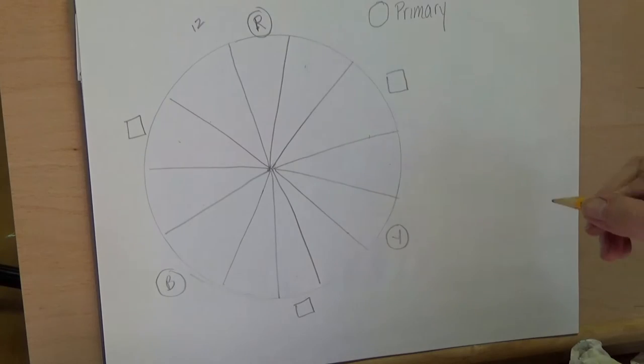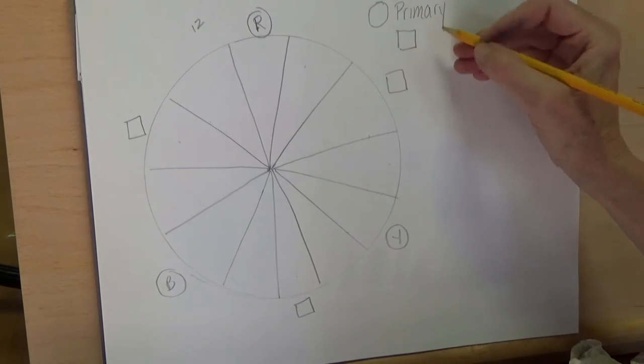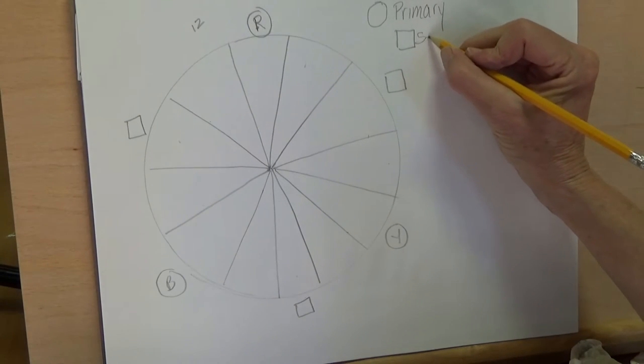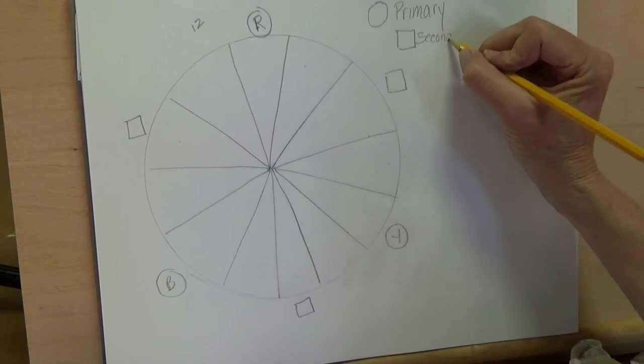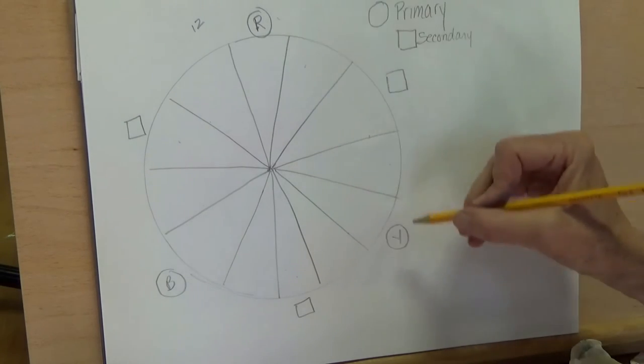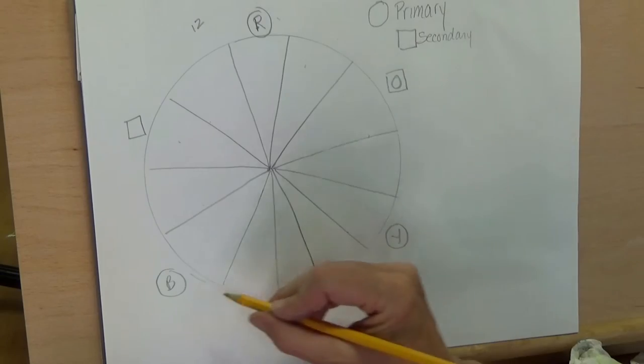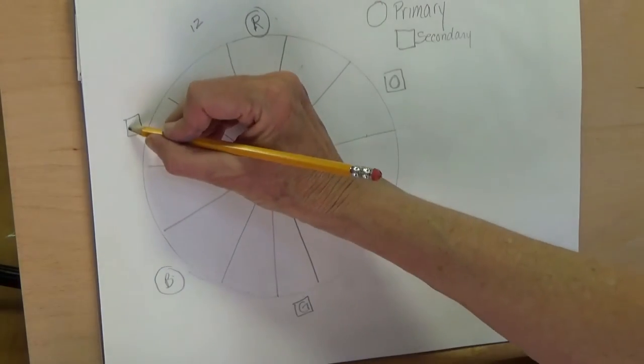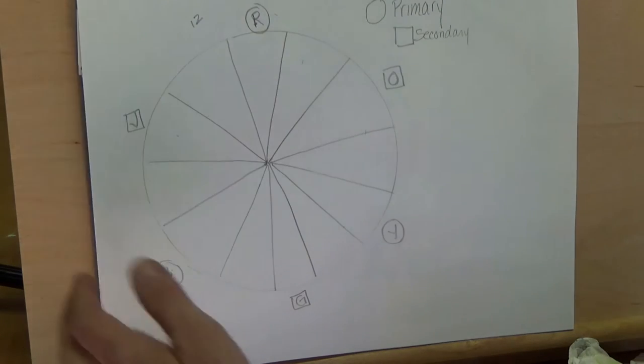The squares are going to be secondary colors. Secondary colors are created when you mix two primaries together. When you mix red and yellow together you get orange. When you mix yellow and blue together you get green, and when you mix blue and red together you get violet or purple.